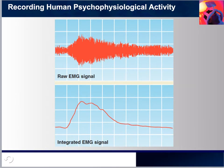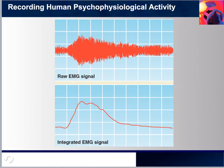Here you can see an artistic rendition of the relationship between a raw EMG signal and its integrated version. The subject tensed the muscle beneath the electrodes and then gradually relaxed it. The main correlate of the increase in muscle contraction is an increase in the amplitude of the raw EMG signal, which reflects the number of muscle fibers contracting at any one time. Most psychophysiologists convert the raw signal into a more workable form — a computer calculates the total amount of EMG spiking per unit of time, and the integrated signal is plotted as a smooth curve whose amplitude is a continuous measure of muscle tension.